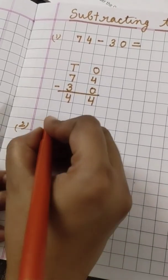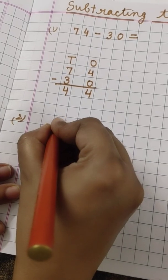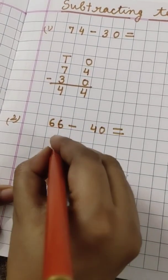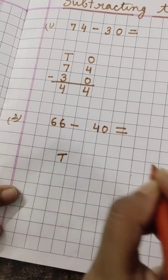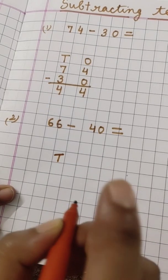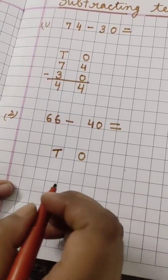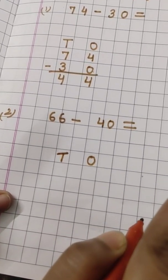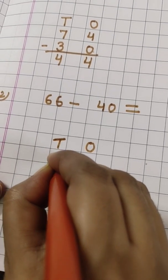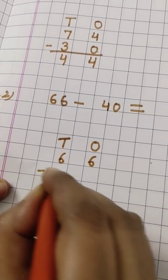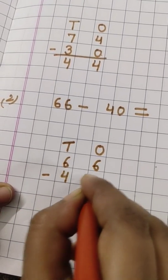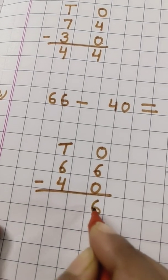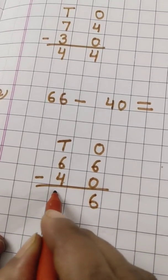Now the second example: I will subtract 40 from 66. Same process — write T then O. I write 6 here and 6 here, put the minus sign, then 4 here and 0 here. If I subtract 0 from 6, I get 6. And if I subtract 4 from 6, I get 2. So the answer is 26.